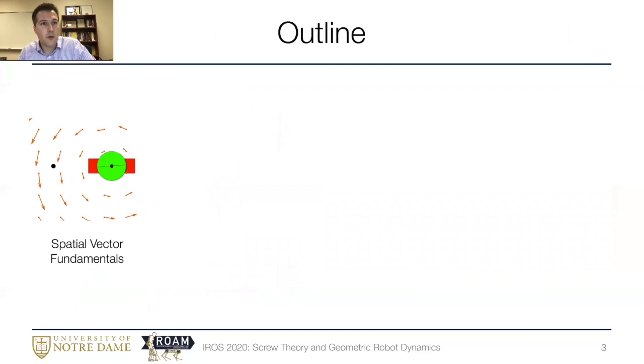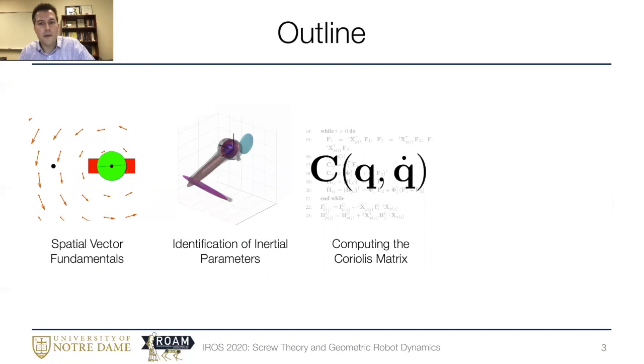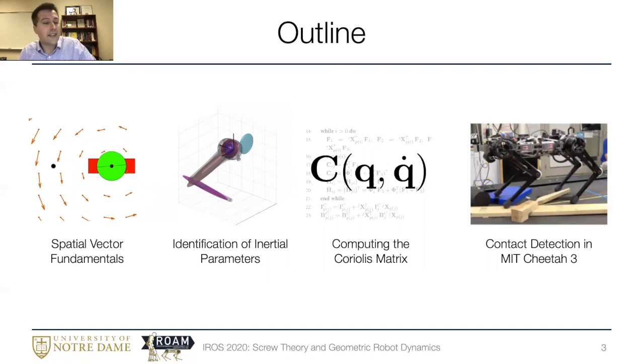So in terms of where we'll go, I'll first start out with a brief review of spatial vector fundamentals where we'll look at the velocity of a rigid body by considering a vector field giving the velocities of its body fixed points. After we understand the dynamics of a single body, we'll then look at how we can identify dynamic models of systems of bodies particularly highlighting recent geometric underpinnings of this problem. I'll then turn my attention to control and tell you about a new method that we can use to rapidly compute the Coriolis matrix and look at its application in contact detection for MIT Cheetah 3.